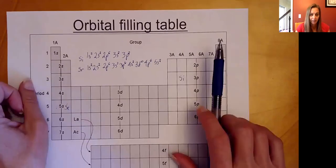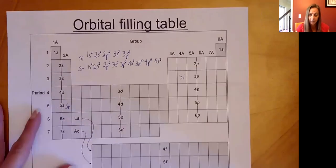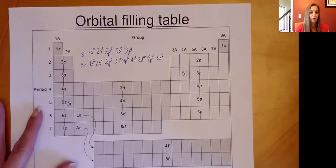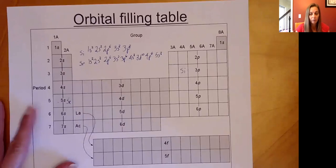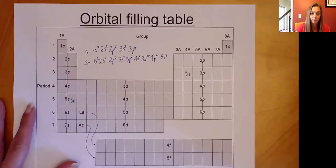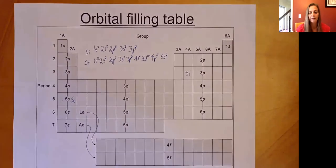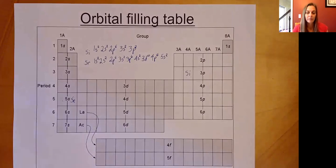That's how we write electron configurations the second way. Use whichever method works better for you. We'll pause here for today and learn a shortcut in class tomorrow.